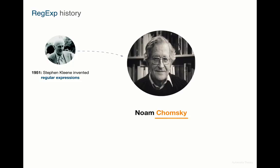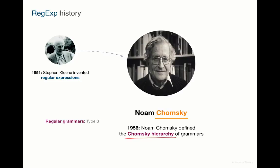Later on, in 1956, Noam Chomsky, known as the father of modern linguistics, defined his well-known Chomsky hierarchy of formal grammars. In particular, regular languages are defined by languages generated by the type-3, or regular, grammars in this Chomsky hierarchy. Regular grammars are the weakest possible formal grammars, sitting right below context-free grammars, which are used for parsing programming languages. This means that in general it is not possible, or at least very hard, to parse a programming language using just regular expressions.